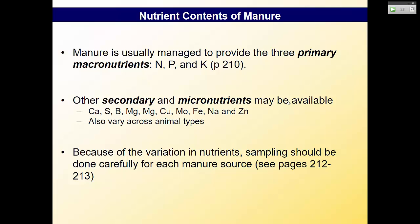Manure is usually managed to provide the three primary macronutrients — nitrogen, phosphorus, and potassium. Potassium is not really considered an environmental issue, so we're mainly concerned about nitrogen and phosphorus. Over the last 10 to 15 years, pressure has really been placed on phosphorus because manures have more phosphorus than the crop needs. A farmer might need 150 pounds of N for corn, but based on manure content and regulations, might only be allowed to apply 60 to 80 pounds via manure and have to make up the rest.